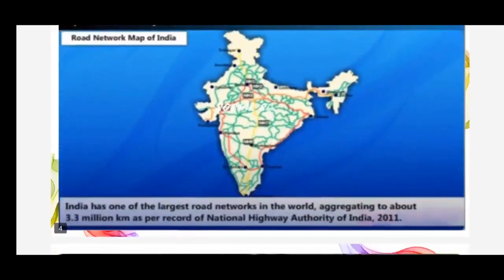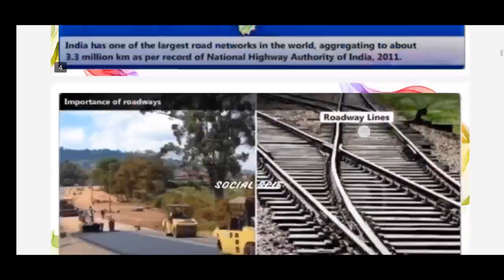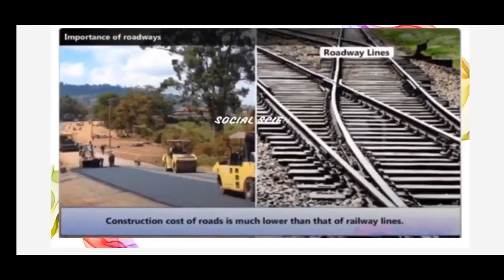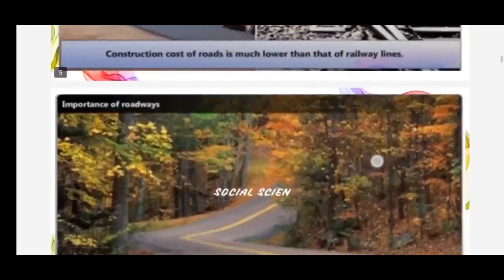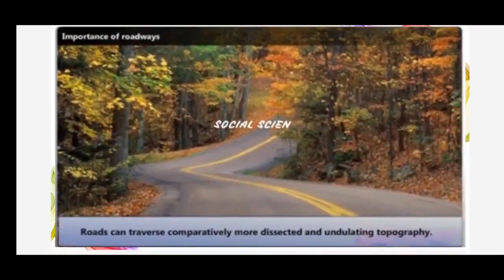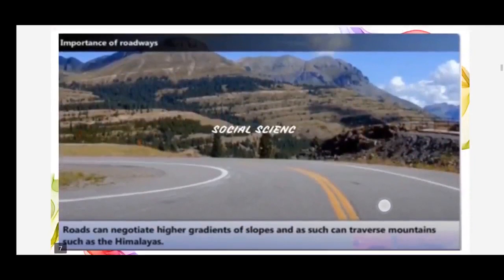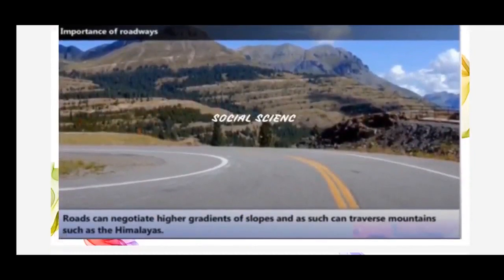Let's recollect what we learnt about roadways and their importance — this will be asked for five marks. Construction of roads is much cheaper when compared to railways, where we have to lay a railway track. Also, roads can traverse comparatively more dissected and undulating topography, meaning on mountain slopes and even the Himalayas we can construct roads, which is not possible for railways.